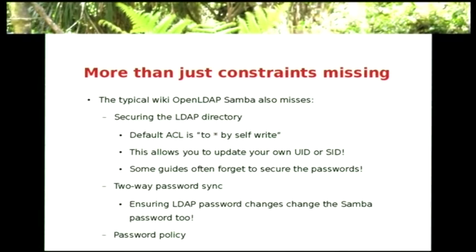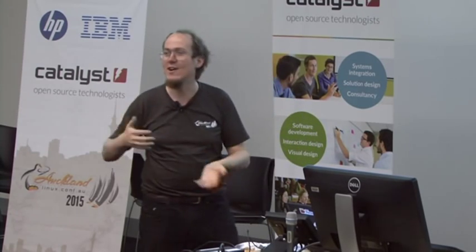There's more than just constraints missing. I looked at OpenLDAP and found the default ACL across the whole directory when you start is 'to star by self-write.' It's like a phone book — you can update your phone number. But do you want to be able to update your UID number? Some guides even forget to mention that you'd better secure those passwords, and the password histories. Some things didn't have password sync — there are modules you can enable, but again, extra things to do.